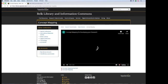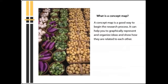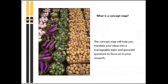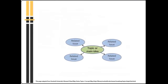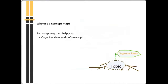In this module you will learn what a concept map is and how to create one for your research. A concept map is a good way to begin the research process — it helps you graphically represent and organize ideas and show how they relate to each other. It will help you translate your ideas into a manageable topic and generate questions to focus on. Research is a creative process involving both analysis and synthesis.